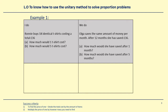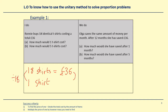First of all it says Ronnie buys 18 identical t-shirts costing a total of £36. So I start by writing 18 shirts = £36. The success criteria says to find the price of one, divide the total cost by the amount of items. So to find one shirt, we divide the cost by 18 — and 36 divided by 18 gives me £2 for one shirt. So one shirt costs £2, and that's part A done.